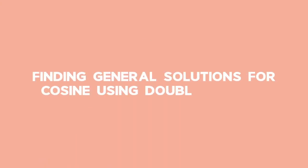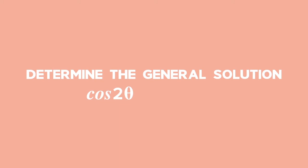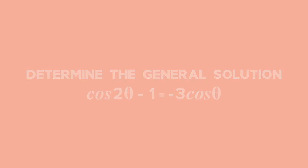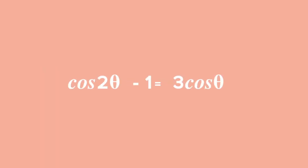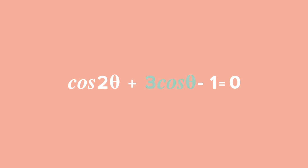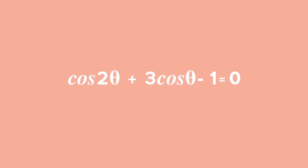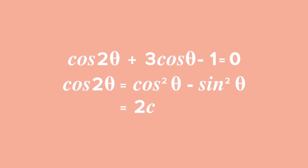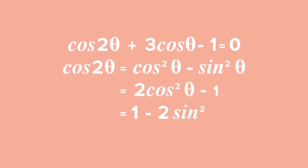Example 3: Finding general solutions for cosine using double angles. Determine the general solution of cos 2 theta minus 1 equals negative 3 cos theta. Start by rearranging so all terms are on the same side, then look at the terms carefully. The key lies within the middle term, 3 cos theta. Remember, cos 2 theta can be expanded in three ways, but only one will work best here.